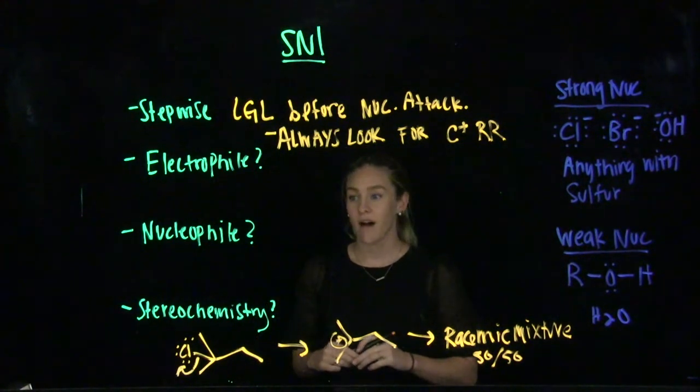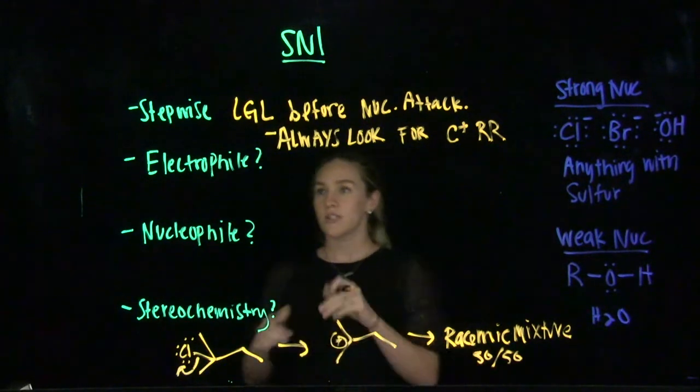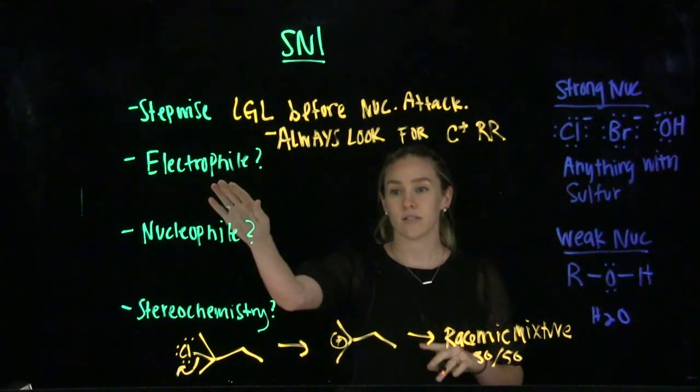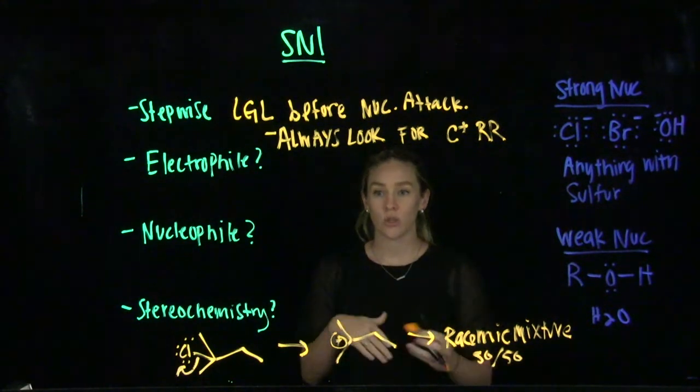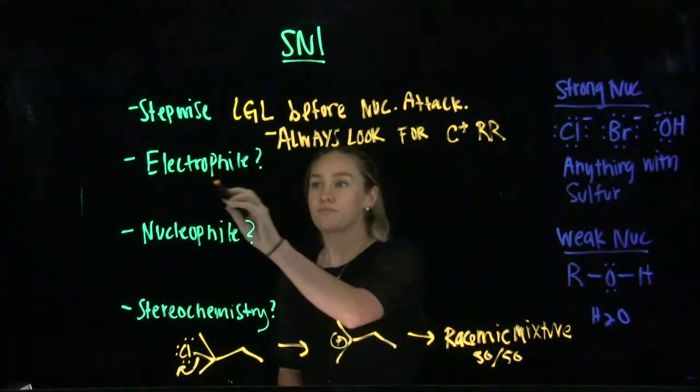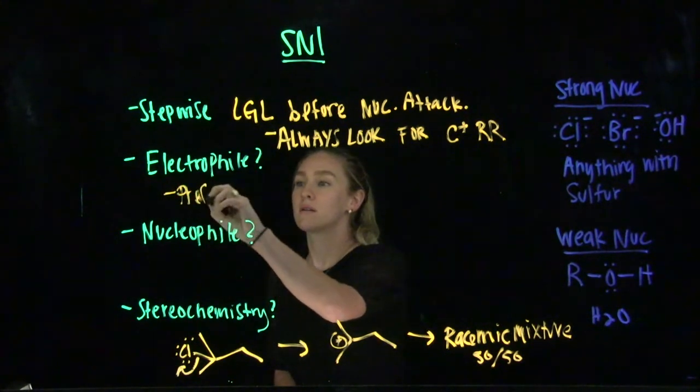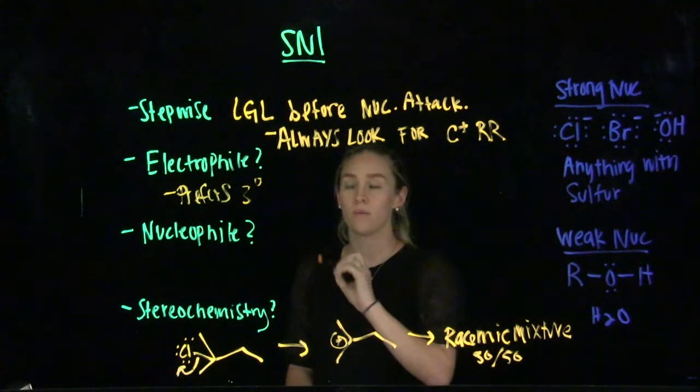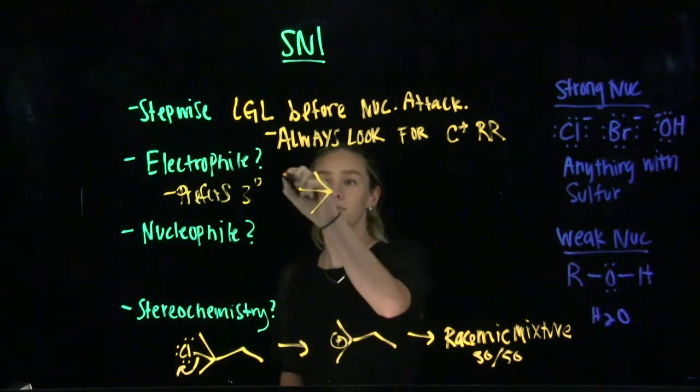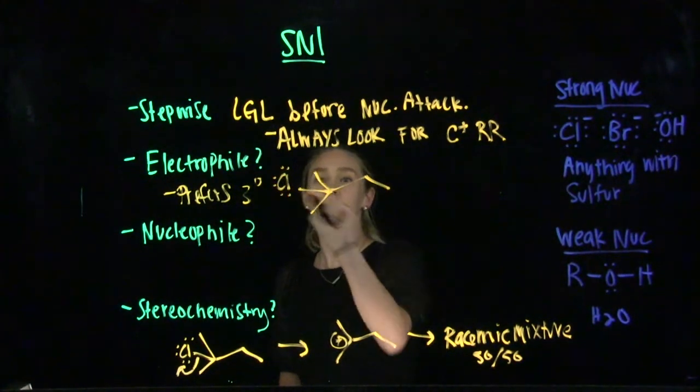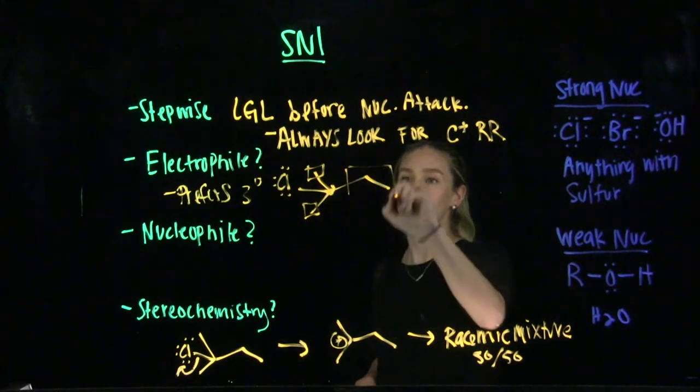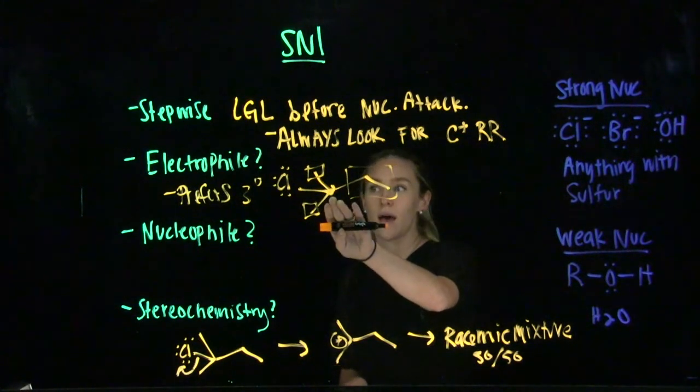Now we're going to talk about the electrophile of an SN1 reaction. In the last video, we talked about primary versus secondary versus tertiary electrophilic centers. We established that SN2 reactions preferred to have a primary electrophile. Different for SN1, SN1 prefers a tertiary electrophile. Our electrophilic center wants to have three other carbon groups attached to it. That makes this electrophile tertiary.